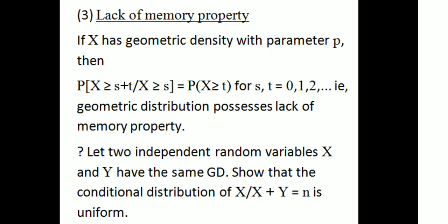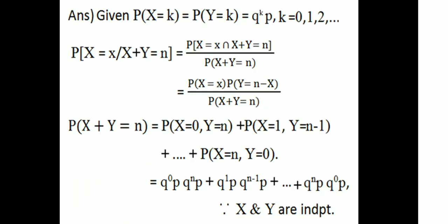Problem: Let two independent random variables x and y have the same geometric distribution. Show that the conditional distribution of x given x + y = n is uniform. We need to find P(X = x | X + Y = n). This equals P(X = x, X + Y = n) / P(X + Y = n). Since X and Y are independent, the numerator is P(X = x) · P(Y = n - x). The denominator P(X + Y = n) = P(X=0, Y=n) + P(X=1, Y=n-1) + ... + P(X=n, Y=0).